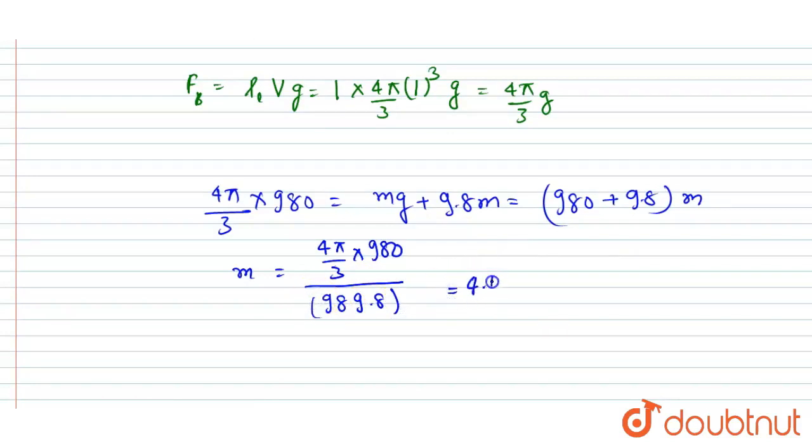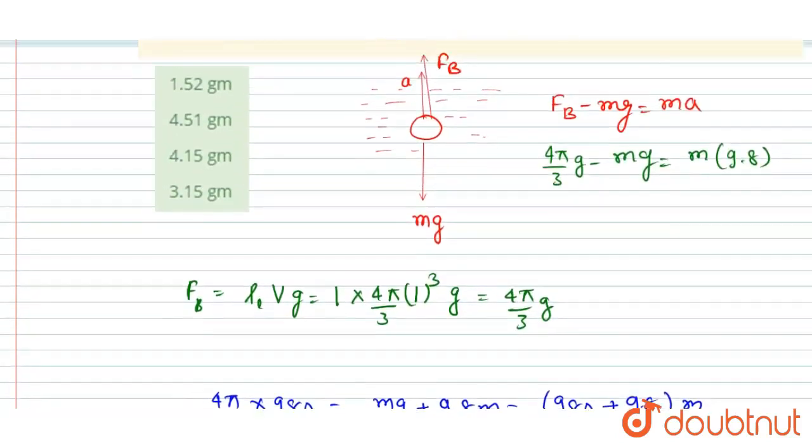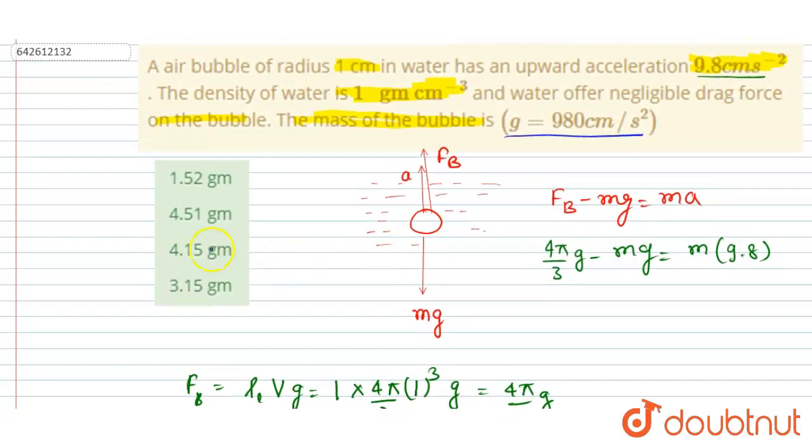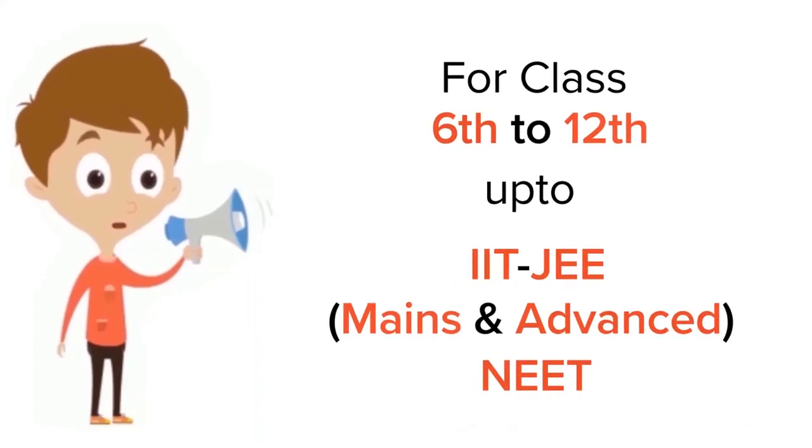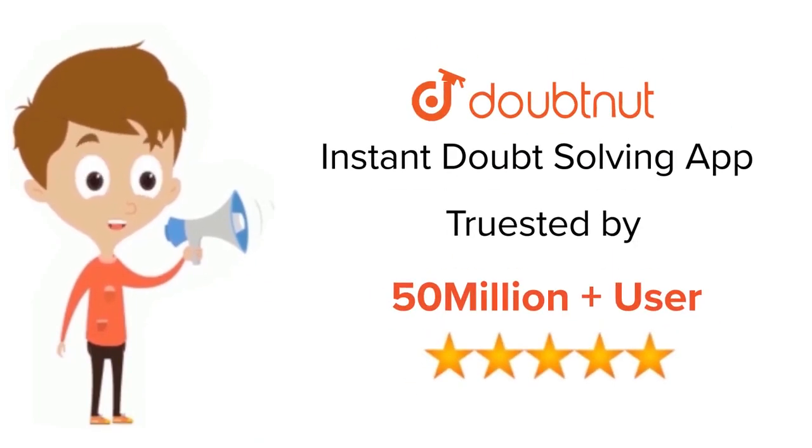So after dividing, you will get the mass is equal to 4.15 grams, right? So you can see 4.15 grams is the C option, so C will be the correct answer. Thank you.